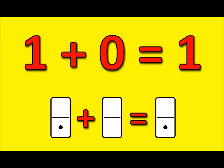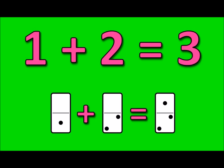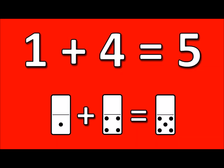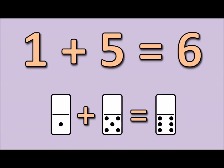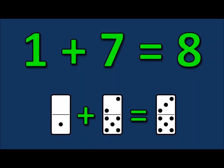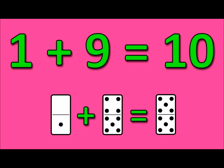1 plus 0 is 1, 1 plus 1 is 2, 1 plus 2 is 3, 1 plus 3 is 4, 1 plus 4 is 5, 1 plus 5 is 6, 1 plus 6 is 7, 1 plus 7 is 8, 1 plus 8 is 9, 1 plus 9 is 10.